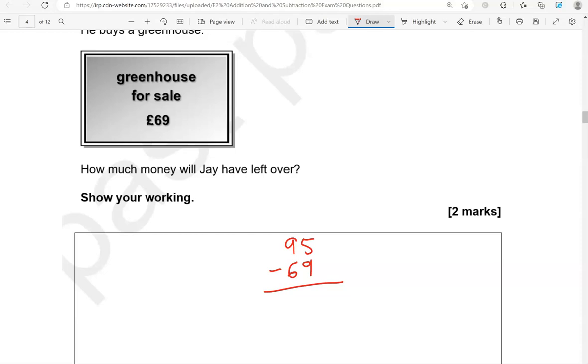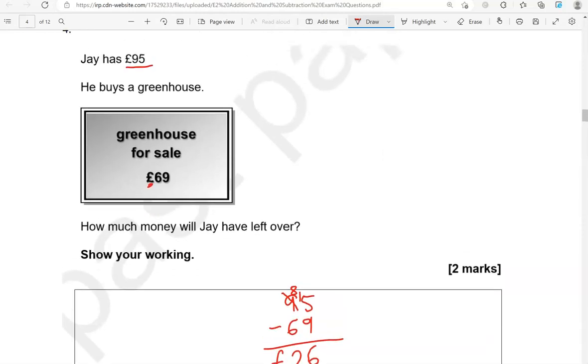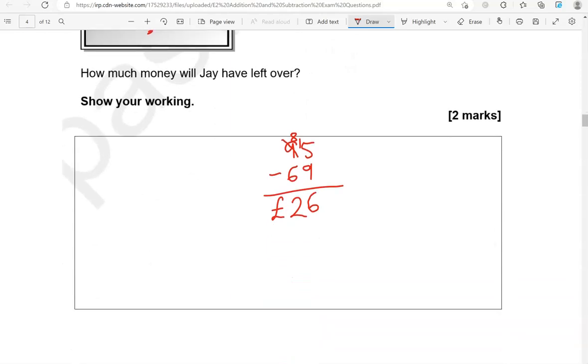We need to take away 9 from the 5, which means we've got to borrow 1 from this 9 here. So this becomes 15. 15 take away 9 gives us 6. 8 take away 6 gives us 2. So that is 26 pounds, because we input pounds. Both the 95 and the 69 were in pounds.